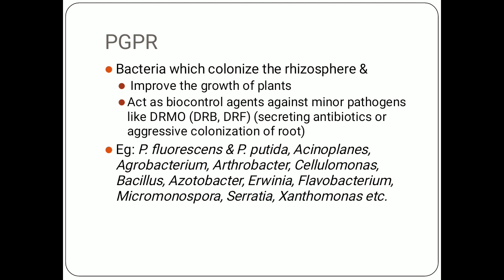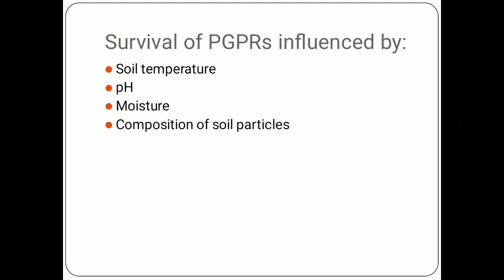Examples of PGPR include primarily Pseudomonas species like Pseudomonas fluorescens and Pseudomonas putida. We also have Actinoplanes, Agrobacterium species, Arthrobacter, Cellulomonas, many species of Bacillus, Azotobacter, Serratia, Arvenia, Flavobacterium, and others. All these Plant Growth Promoting Rhizobacteria help in plant growth either by directly improving growth or by acting as biocontrol agents against deleterious microorganisms.